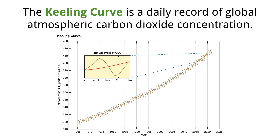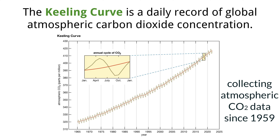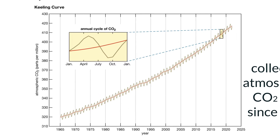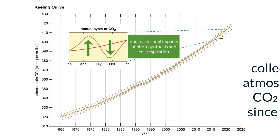Humans have been keeping significant track of atmospheric carbon dioxide concentrations since 1959, via an observatory in Hawaii started by a scientist named Charles Keeling. The data continues to be collected and is plotted into a graph known as the Keeling Curve. Looking at the data, we can identify two important trends. The first trend is that the amount of atmospheric carbon dioxide fluctuates on a yearly basis, seen as sharp ups and downs every year, due to imbalances of photosynthesis and cell respiration that change with the seasons.